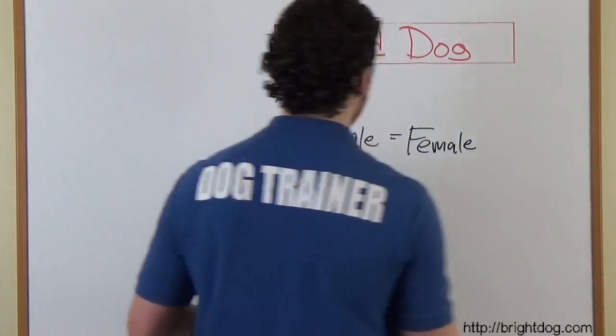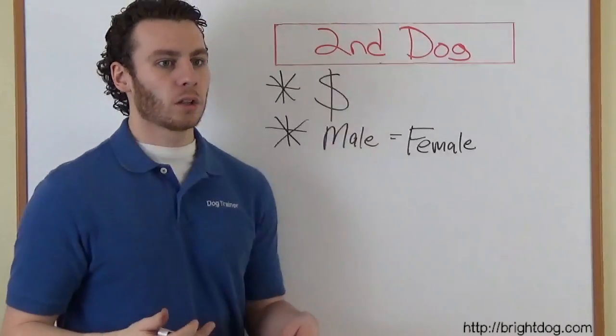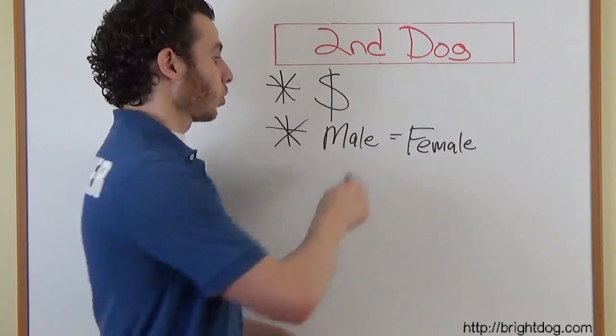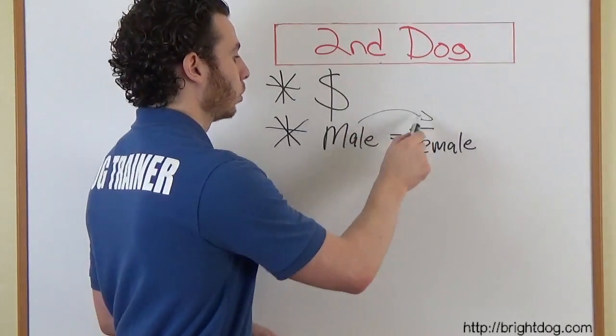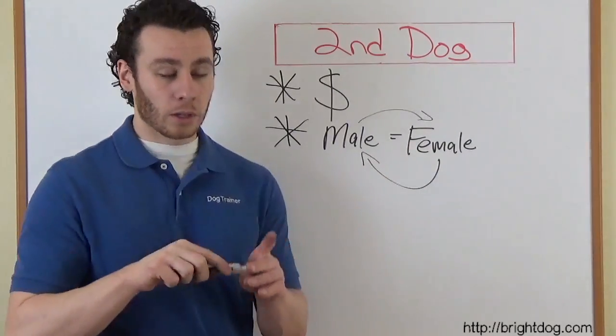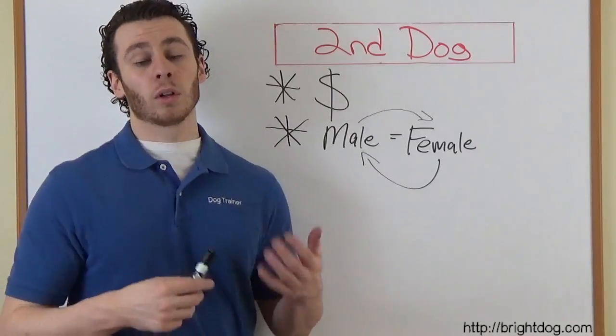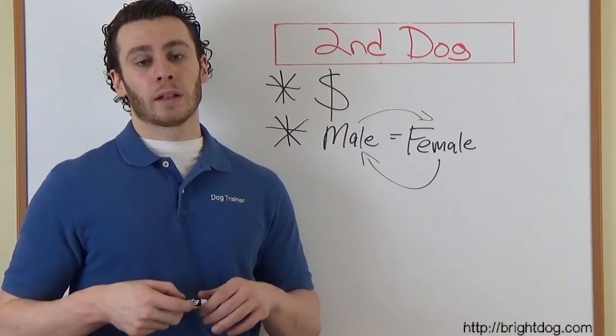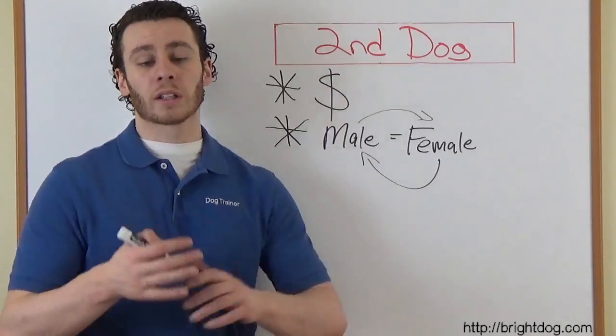The new dog should be of the opposite sex. So if you have a male dog and you're thinking of getting a second dog, try to get a female dog. If you have a female dog and you're thinking of getting a second dog, try to get a male dog. Because having dogs of the same sex, they're more likely to fight, more likely to not get along.